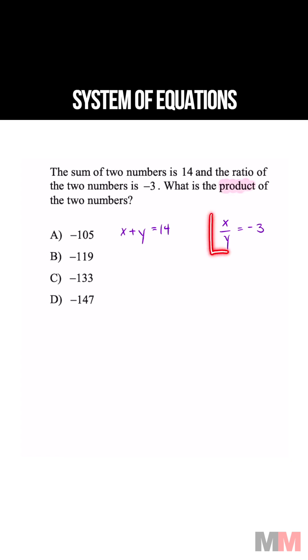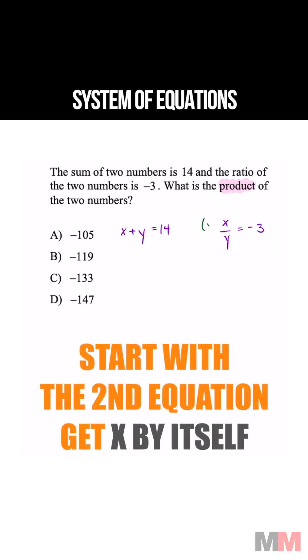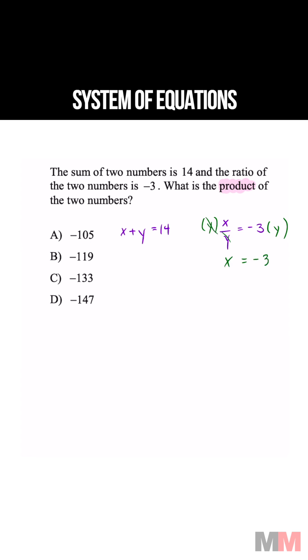Let's go ahead and find x and y first by starting with this equation. All you have to do to get x by itself is multiply by y: x equals negative 3y.